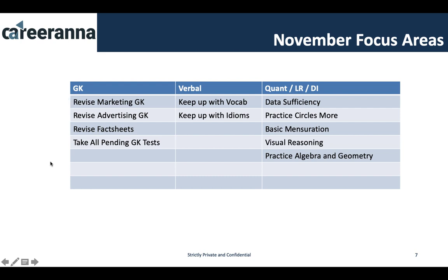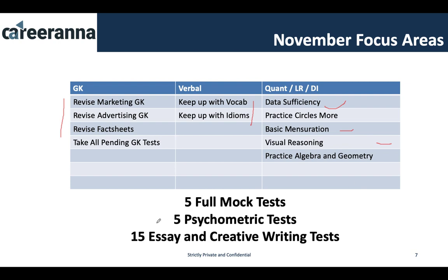Moving to November, the major focus should be revision, revision, and revision. In GK and verbal, do everything required for revision with nothing new to study. For the other sections, complete data sufficiency, basic mensuration, and visual reasoning. From data sufficiency you will definitely get a question, and from visual reasoning almost ten questions. For mock frequency: if appearing for CAT in November, take two full-length mock tests, two psychometric tests, and around ten SN creative writing tests. If applying through XAT or GMAT, go for five full-length mocks, five psychometric tests, and fifteen SN creative writing tests.